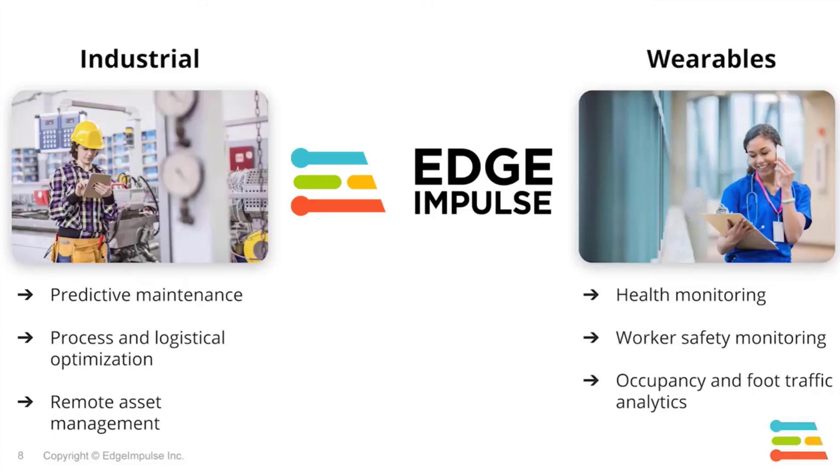As a platform, in theory any machine learning capabilities needed for the endpoint can be done using Edge Impulse, but like any business you have to have focus areas. We are focusing on two specific opportunities: one is around human health — devices that focus on human health — and the other is around machine health — devices that focus on knowing the health of machines.